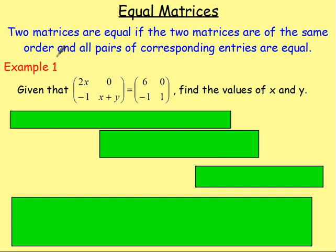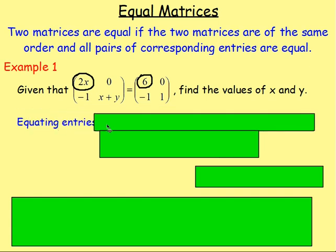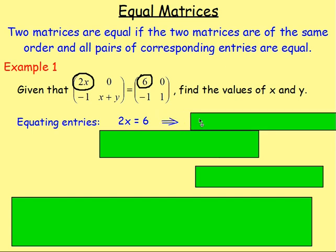Remember, two matrices are equal if the order is the same. The order of this matrix — well, this has two rows, two columns, so that is a two by two matrix. And the order of this matrix — again, two rows, two columns — it's a two by two. So this 2x here must equal this 6. The 0 here obviously equals 0. The negative 1 would equal negative 1. And the x plus y would equal 1. So the corresponding entries are equal. We can say the 2x is equal to 6, meaning x equals 3.